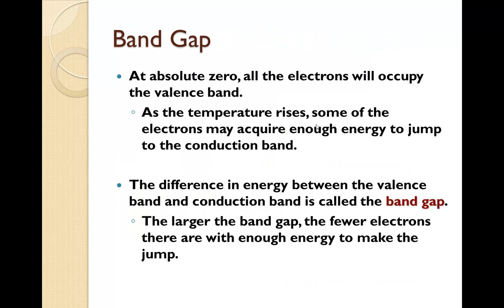At absolute zero, all the electrons will occupy the valence band. As the temperature rises, some of the electrons may acquire enough energy to jump to the conduction band. The difference in energy between the valence band and the conduction band is called the band gap. The larger the band gap, the fewer electrons there are with enough energy to make the jump.